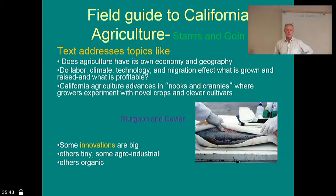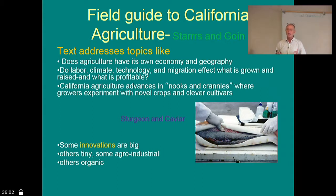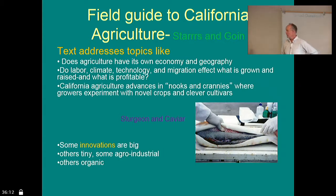California has the seventh largest economy worldwide, so we definitely have our own economy and agriculture is a huge part of it. Agriculture is about third in total revenue when you look at the service industry and things like that. But in terms of scope, history, and how it's part of California — and in terms of how much land it uses — it's much bigger than that.